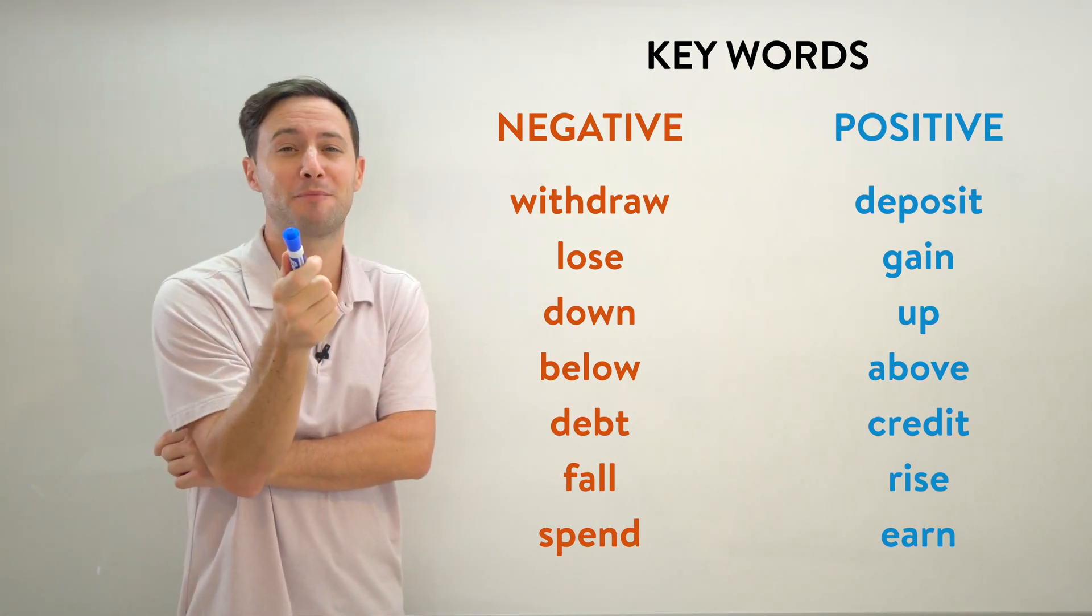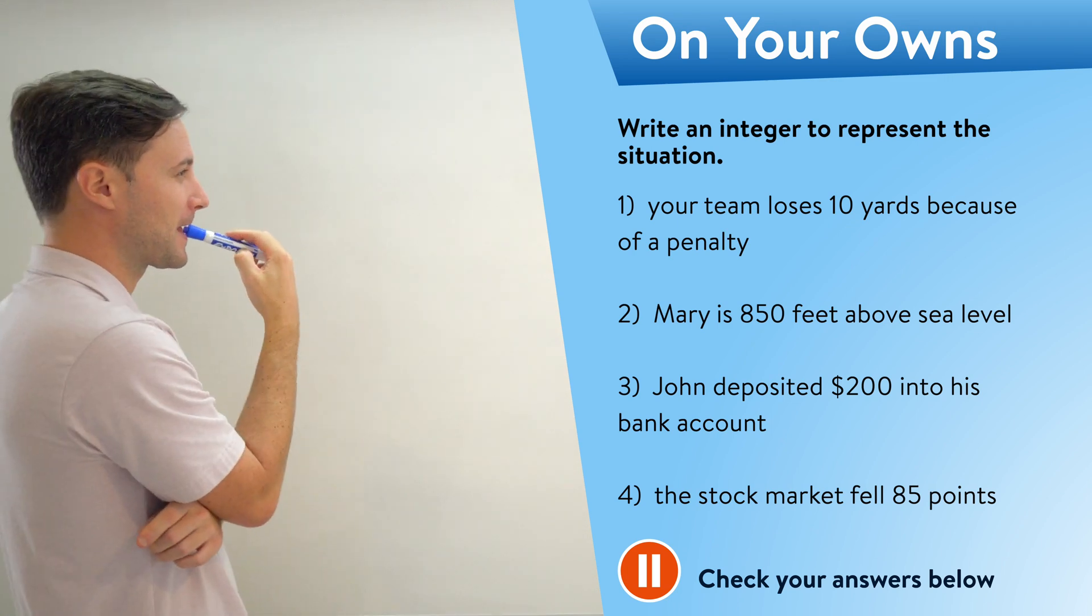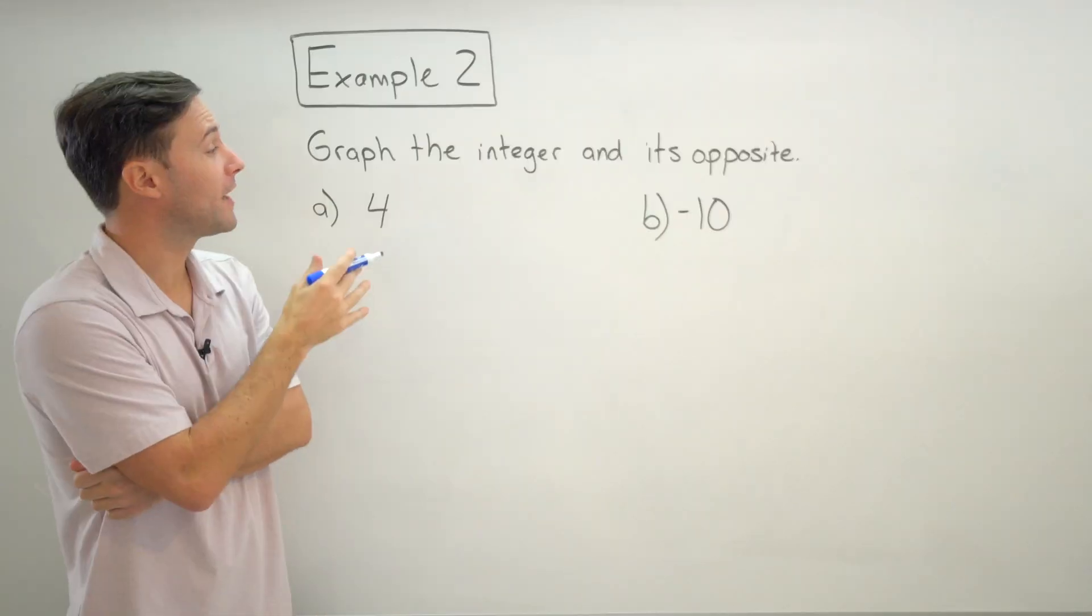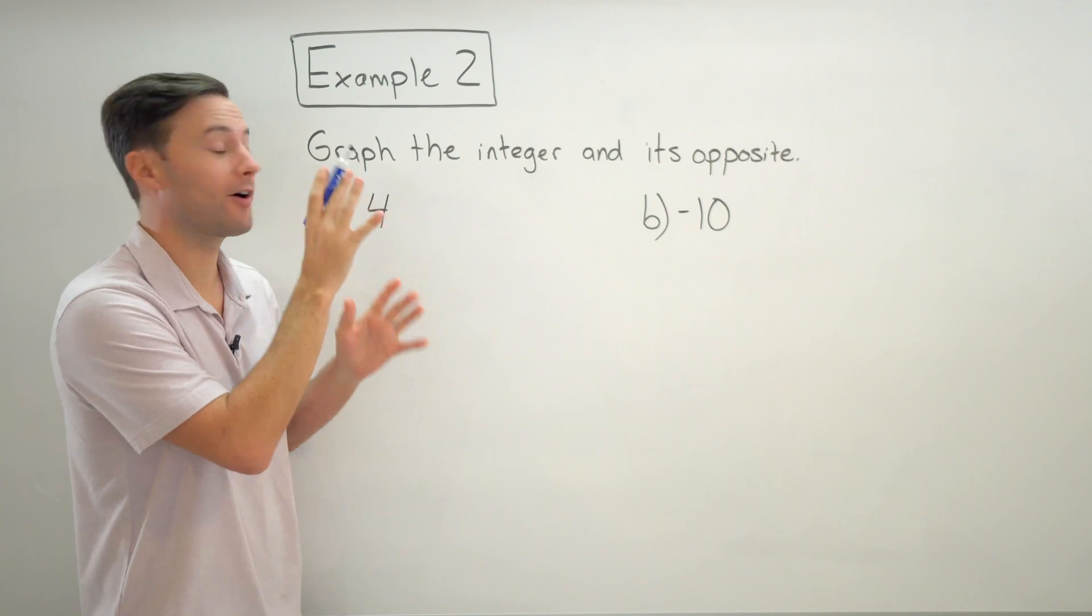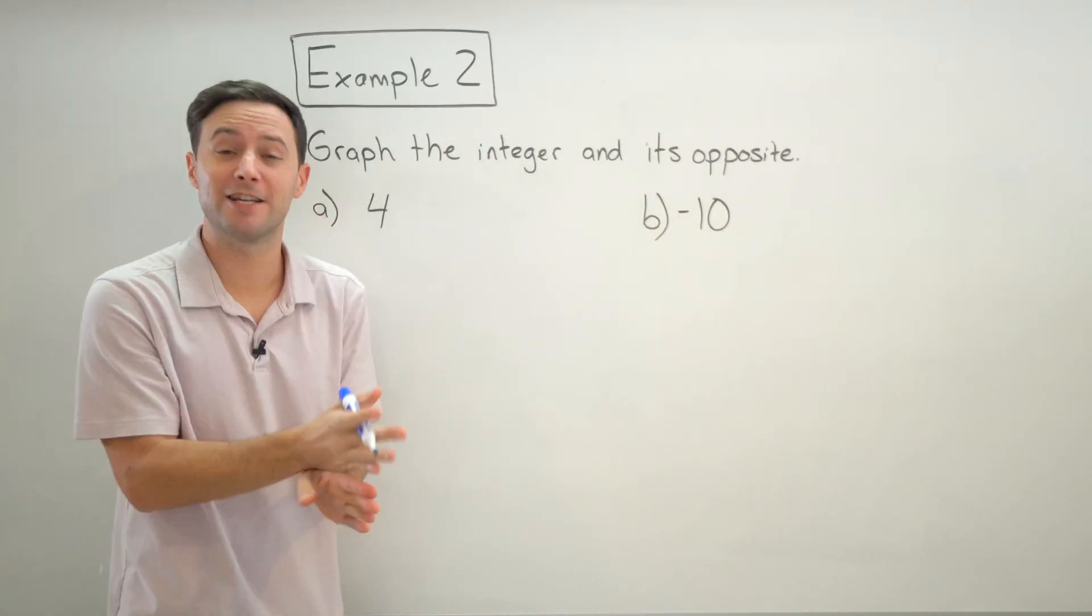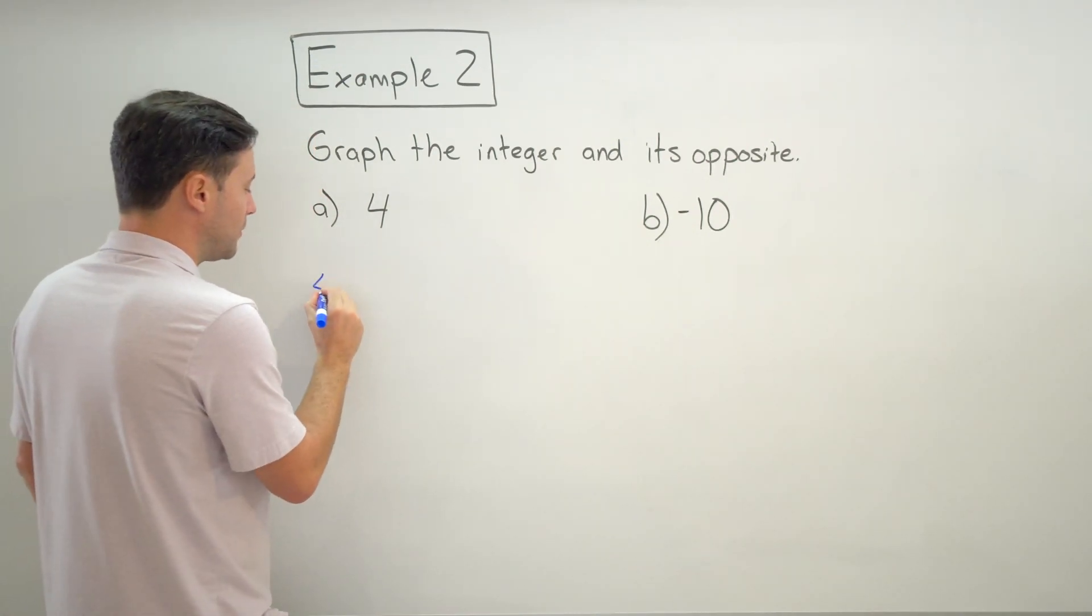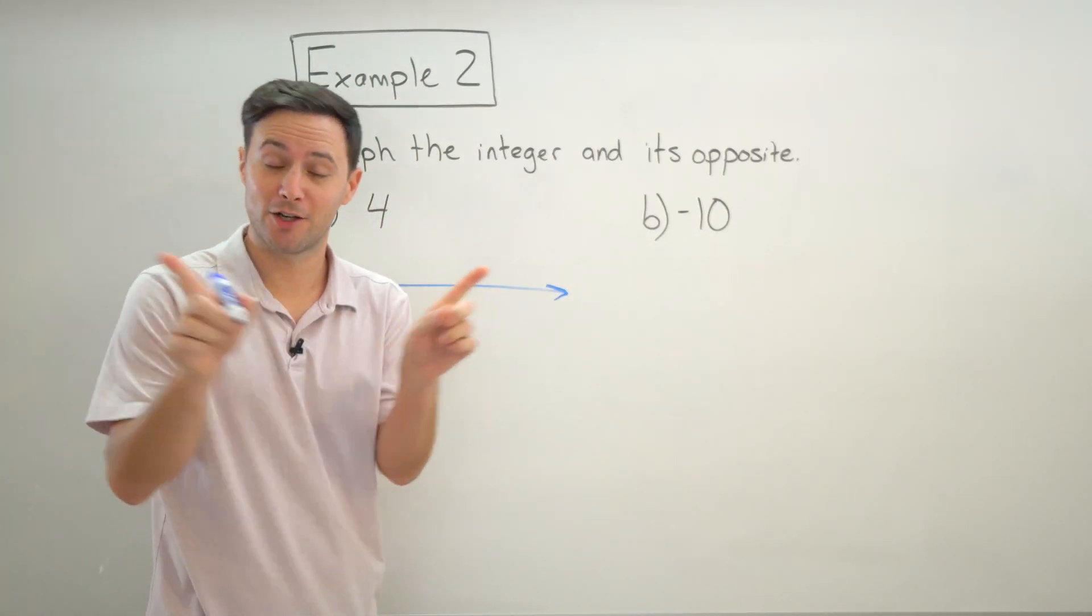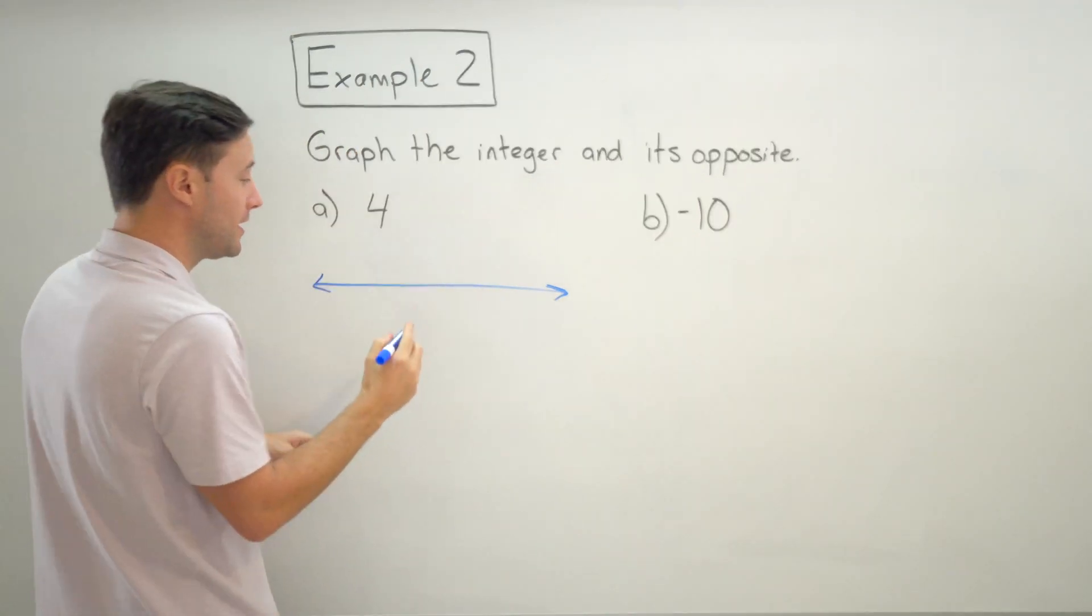So those are some words you definitely want to know. Here's a few problems to try on your own. All right, let's get to the next example. Graph the integer and its opposite. So for this example we're going to be graphing these on a number line, and since we're graphing the opposite, I know that zero should be right in the middle. So I'm going to start with my number line - arrows at both ends are really important. That means it goes in both directions forever. Make sure you have that.